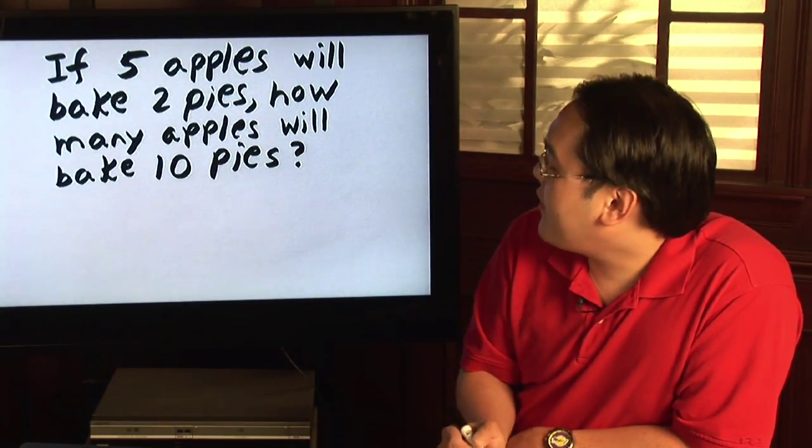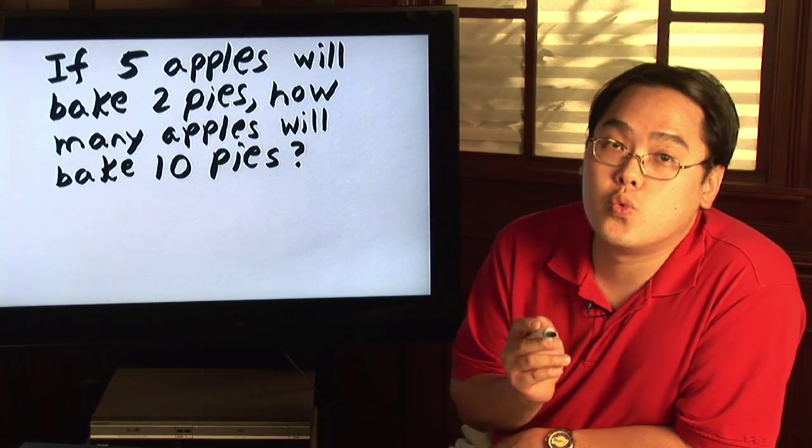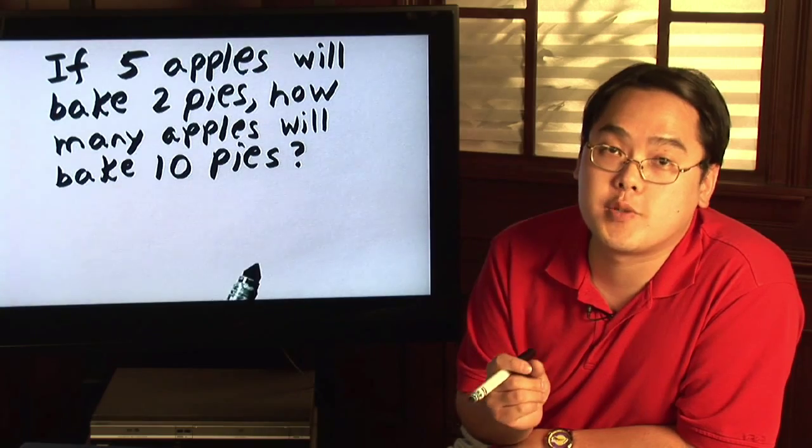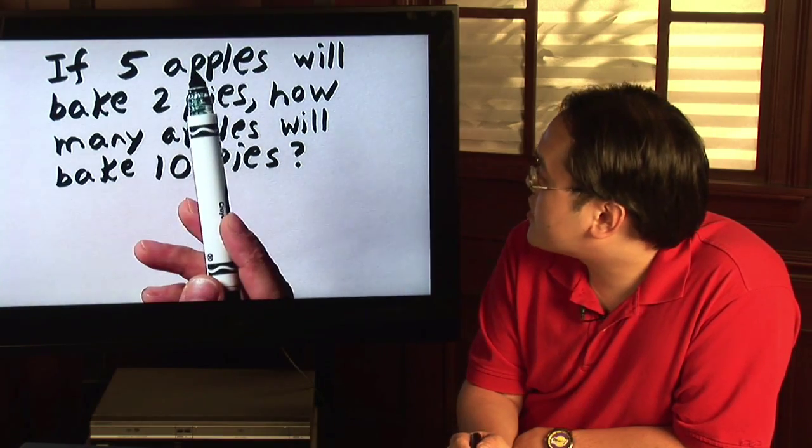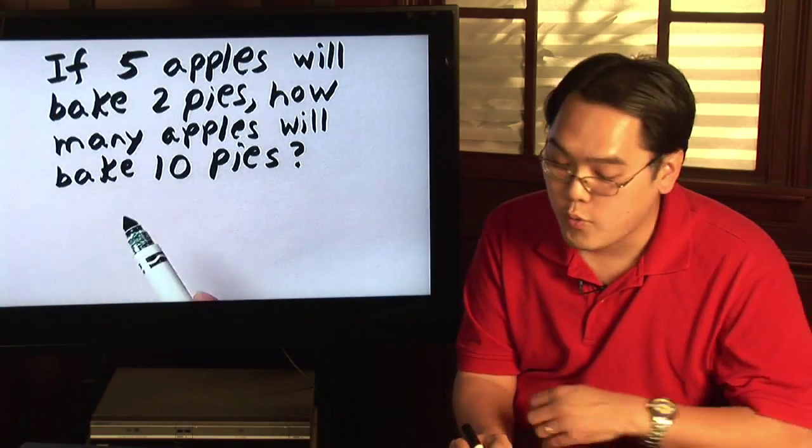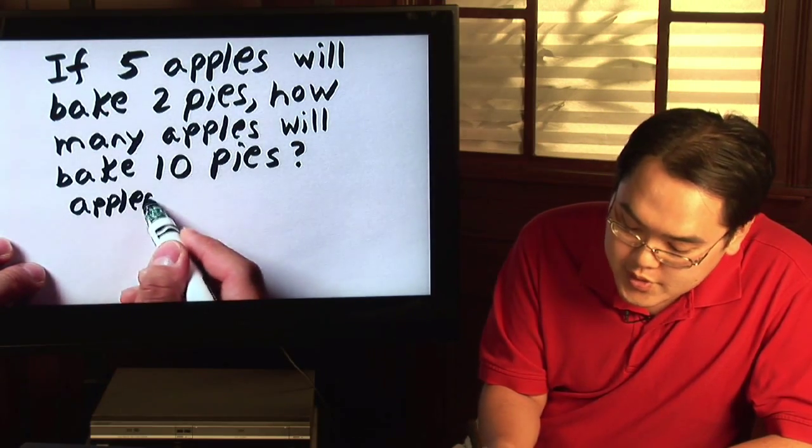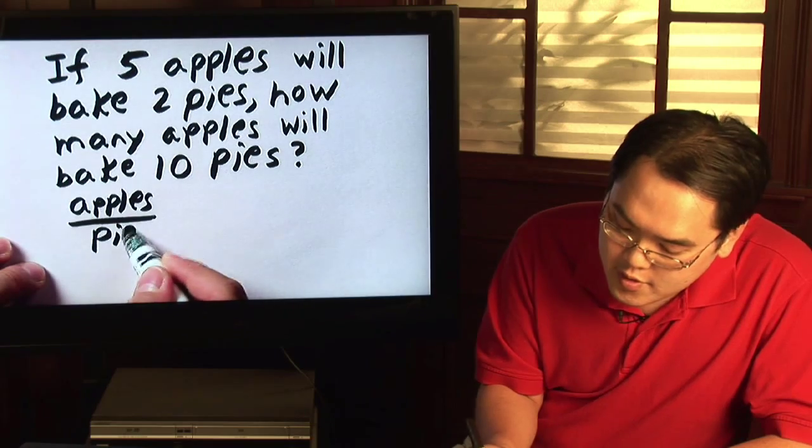Now what we have here is you have to make a decision as to which you want to be on top and which variable you want to be on the bottom. Because apples is mentioned first and pies second, what you might want to do is create a ratio involving apples over pies.